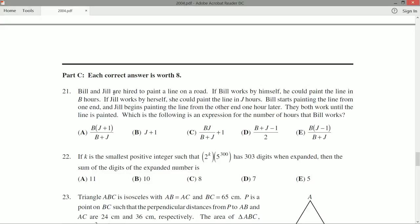Bill and Jill are hired to paint a line on a road. If Bill works by himself, he could paint the line in B hours. If Jill works by herself, she could paint the line in J hours. Bill starts painting the line from one end, and Jill starts painting the line from the other end one hour later. If they both work until the line is painted, which of the following is an expression for the number of hours that Bill works?